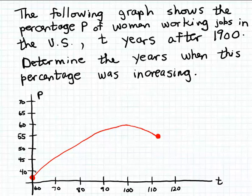we can see that the outputs from the function p, in other words, this percentage, was increasing from the input 60 to the input 100. Okay, so the graph is rising, the outputs are increasing between t equals 60 and t equals 100, in other words, from the input 60 to the input 100.